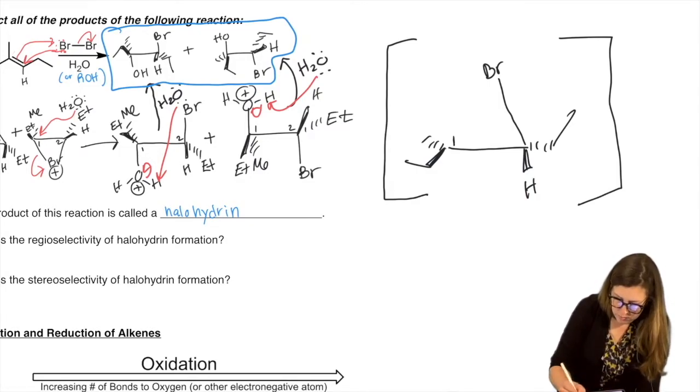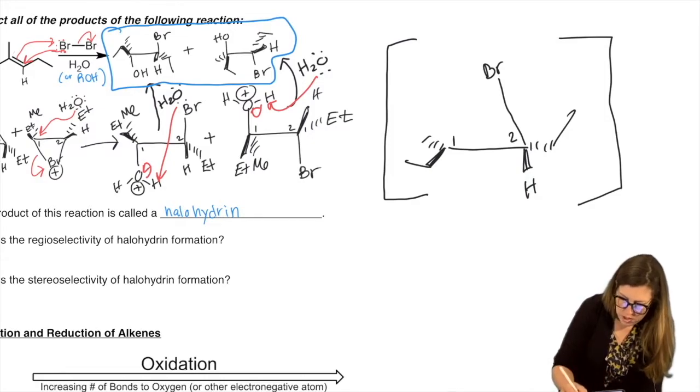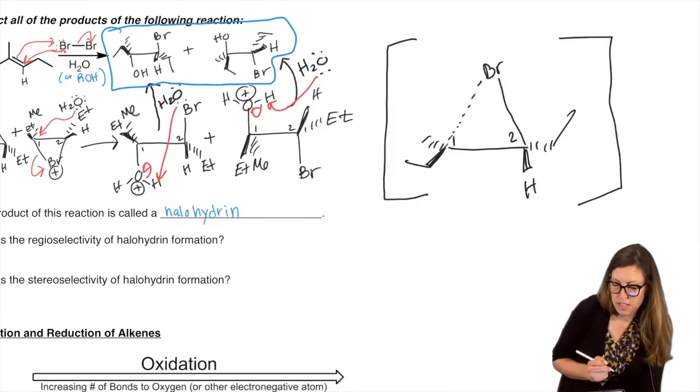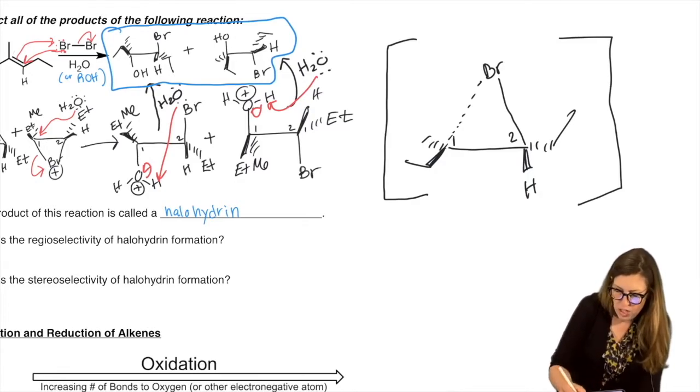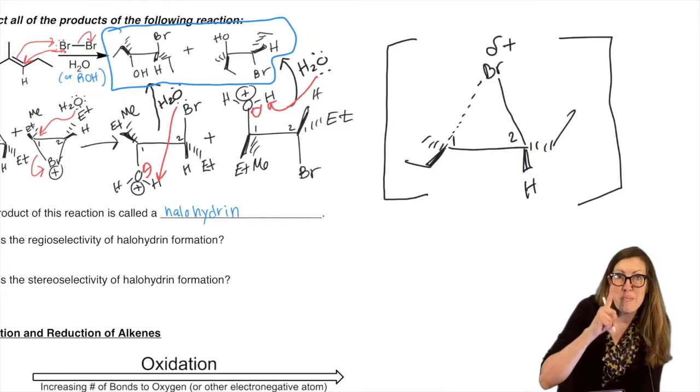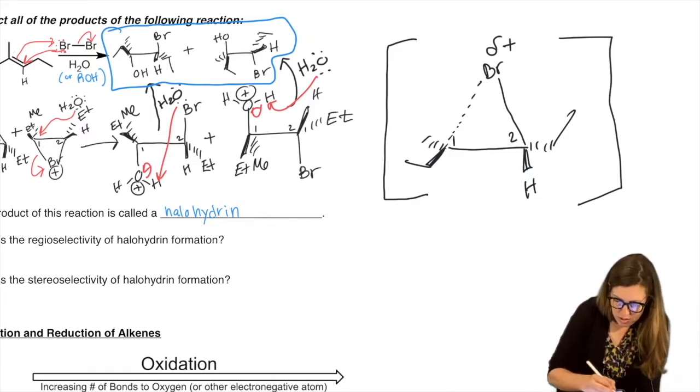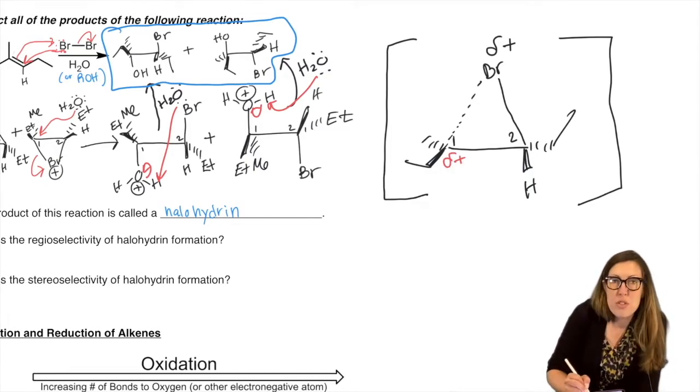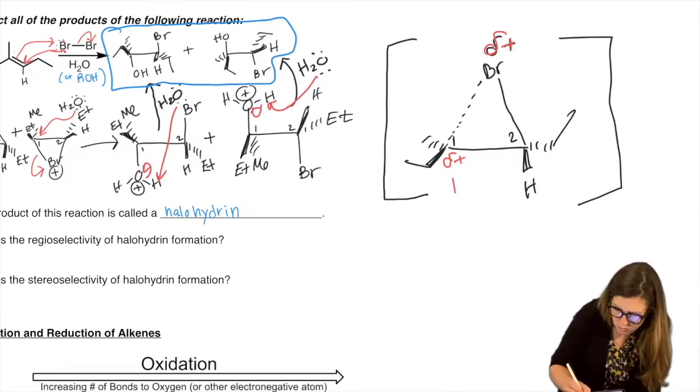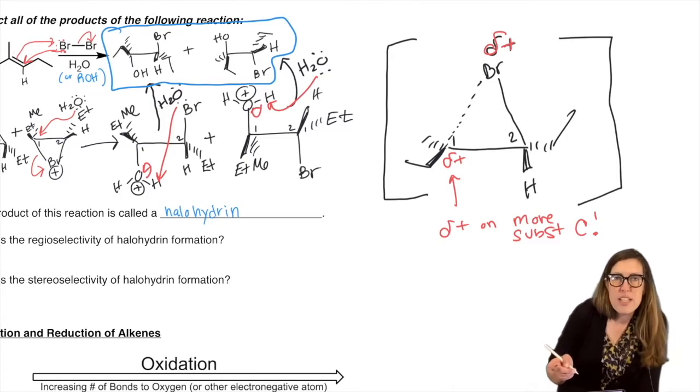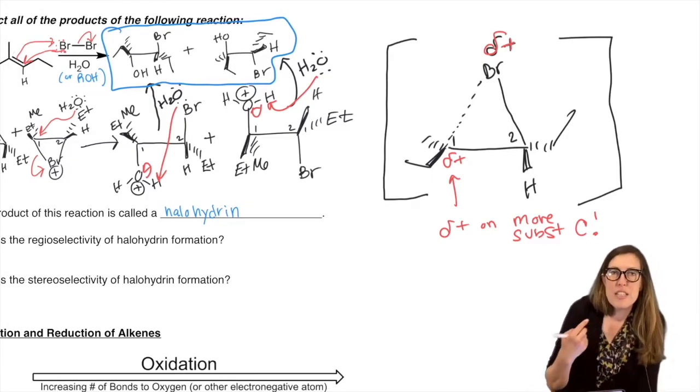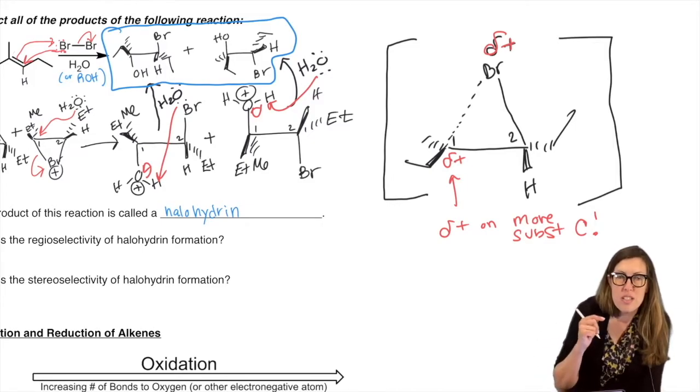So we know that the more substituted carbon - I drew the ethyl as a line so we'll do that. Okay, so the more substituted carbon was carbon one. So that's where the bond is going to break from the bromonium ion. It's leaving there because the new group is going to attack there. So if it's breaking, it's not a full plus - it's a delta plus in that transition state. But that means there is a partial carbocation character there, and it's on that more substituted carbon.